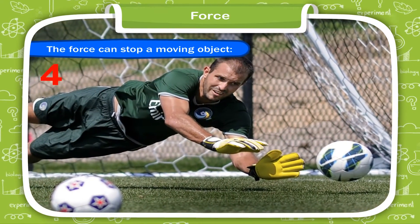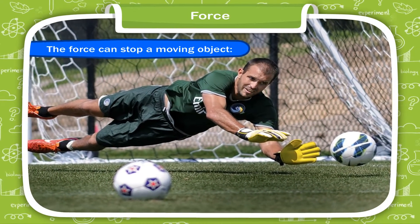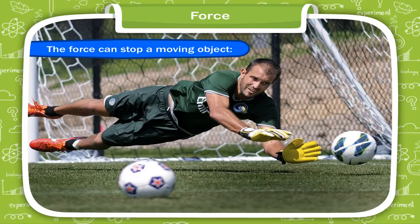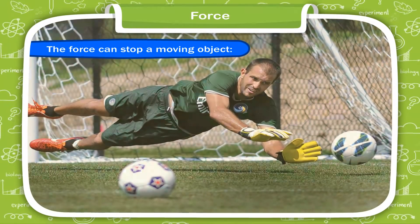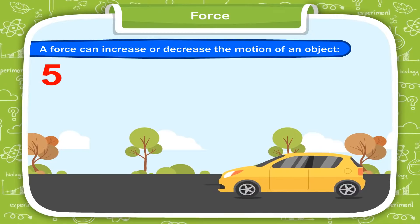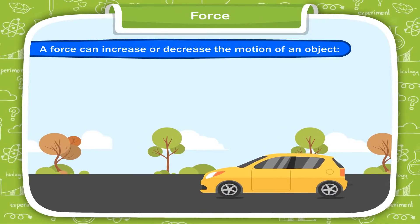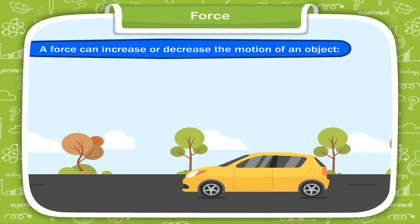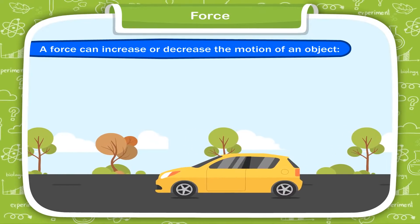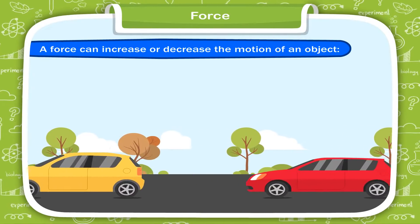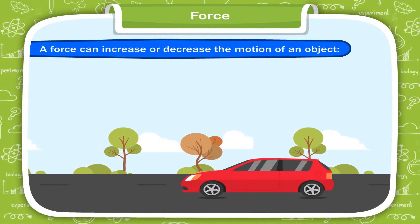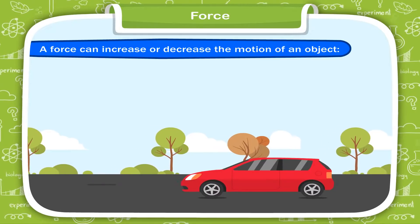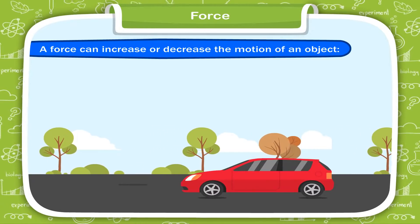Fourth, a force can stop a moving object. For example, in a game of football, a player applies his foot as a force to stop the movement of the football. Fifth, a force can increase or decrease the motion of an object. When a force is applied on a moving body, it can bring about a change in the speed of the moving body, depending upon the direction in which force is applied.